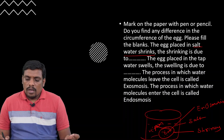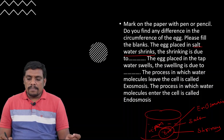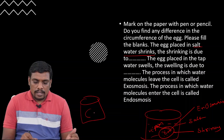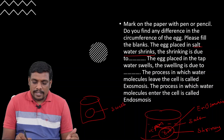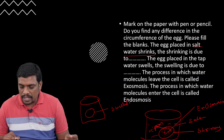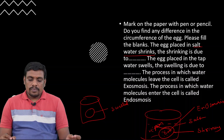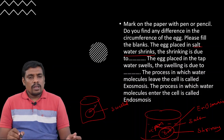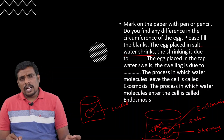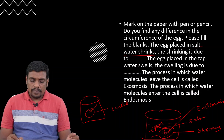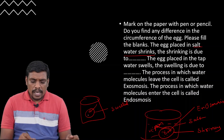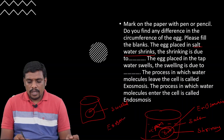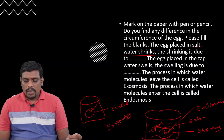Now let us observe the second egg which is placed in the tap water. The egg placed in tap water swelled, so its circumference is more compared with the egg placed in salt water. What is the reason? The water is moving into the egg from the beaker. This kind of movement of water from the beaker into the egg is called exosmosis.